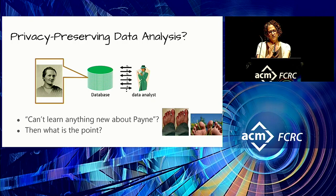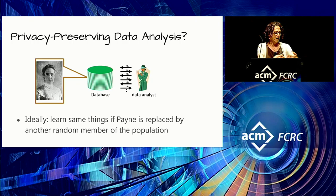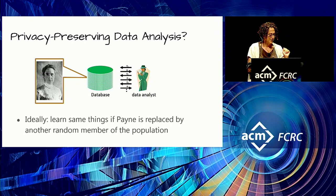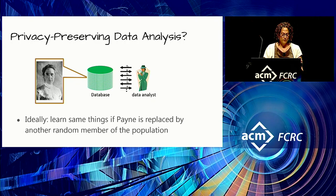We chose to define this as not a privacy compromise. The justification is that, ideally, we would have learned the same things about Payne even if she had opted out or been replaced by another random member of the population — such as Henrietta Swan-Leavitt, the first to note a relation between certain variable stars' peak brightnesses and their period, which provided a valuable means for measuring distances across space.